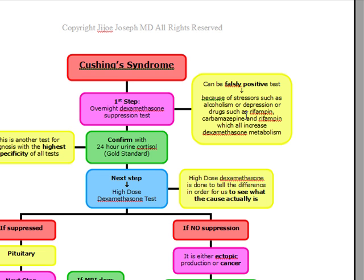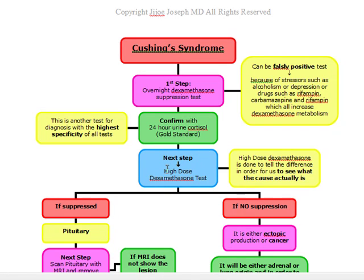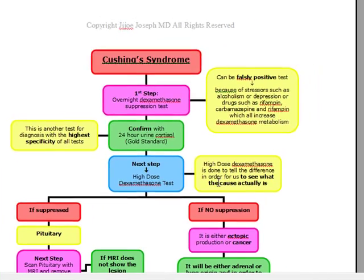Once we confirm with a 24-hour urine cortisol, our next step is going to be a high-dose dexamethasone test. If they ask for the test with the highest specificity, you're going to put down 24-hour urine cortisol. Once we've confirmed with the 24-hour urine cortisol, we want to find out what is the cause of the Cushing's Syndrome. The test we're going to do to find out the cause is a high-dose dexamethasone test — it's going to let us see what the cause actually is.